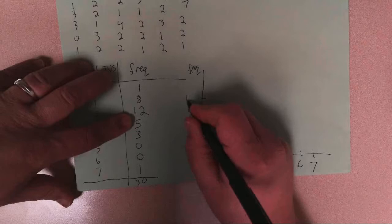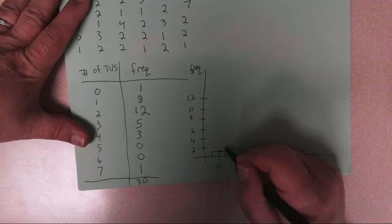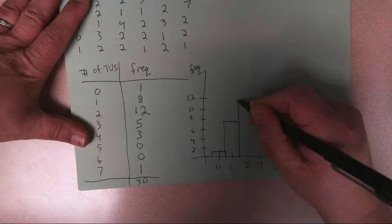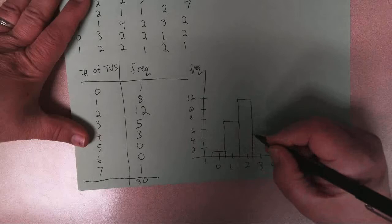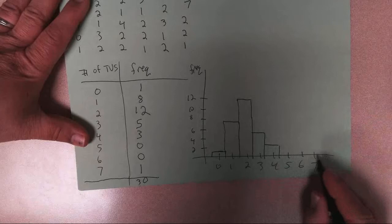And so 0 goes up to 1 TV. I'm going to put a bar there above 0, centered at 0 for 1 TV. 1 is going to go up to 8 TVs. The 2 goes up to 12 TVs. And then the 3 goes back down to 5 TVs. The 4 is going to go down to 3 TVs. There's no 5, no 6, and then the 7 is 1 TV again.